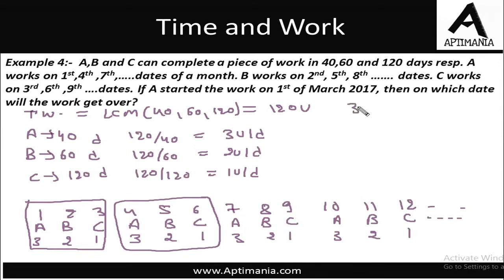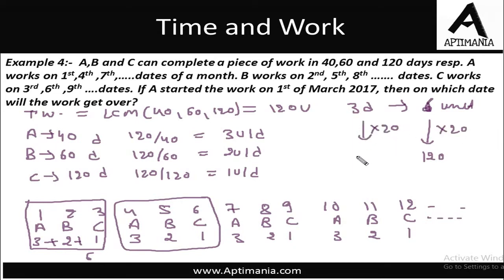In 3 days they are completing a total of 3 plus 2 plus 1, that is 6 units. So to complete a total of 120 units, we need to multiply this 6 by 20, so here also we multiply by 20. So they required a total of 60 days to complete the work. Since the same cycle is repeating, we can directly say: 6 units in 3 days, total work 120 units — multiply by 20 — so 3 times 20 is 60 days. In 60 days they will complete the work working in this particular pattern.